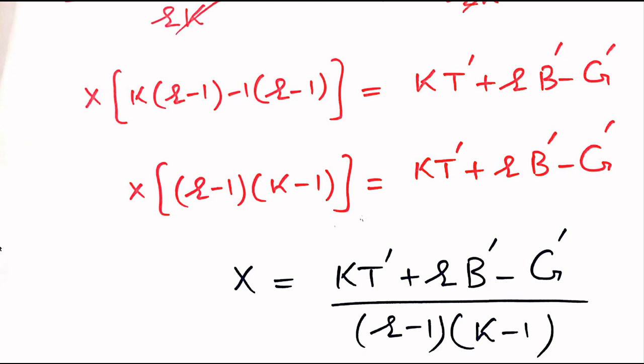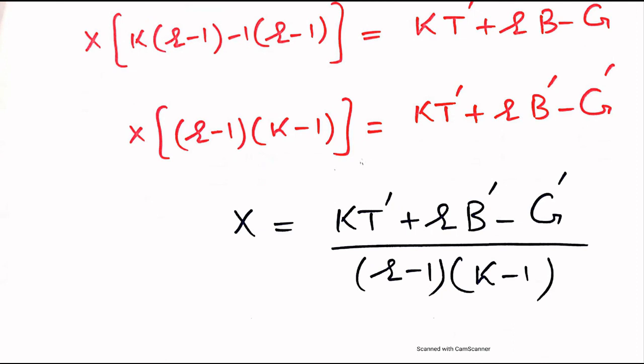This is the formula to calculate the single missing observation in randomized complete block design. If you want to see videos on randomized complete block design or the layout of randomized complete block design, then click the link in front of your screen. Thanks for watching.